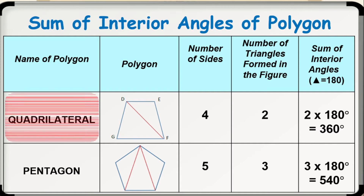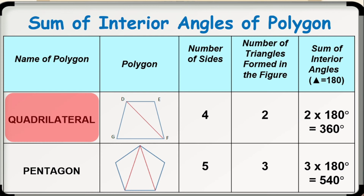Recall that a quadrilateral has four sides. What do you think is the number of triangles formed in the figure? Correct! We have two triangles in a quadrilateral. Therefore, the sum of interior angles is 2 times 180 degrees, which is equal to 360 degrees.